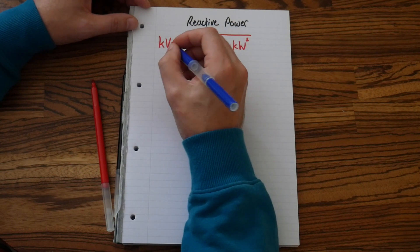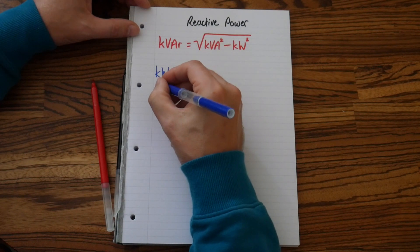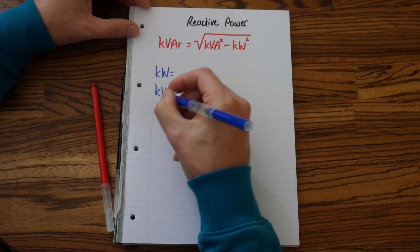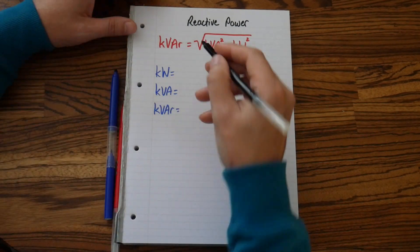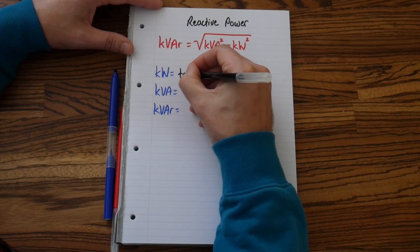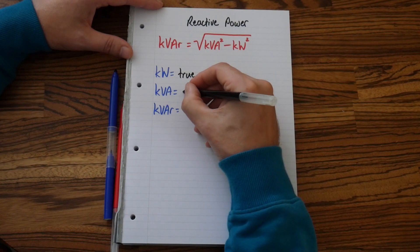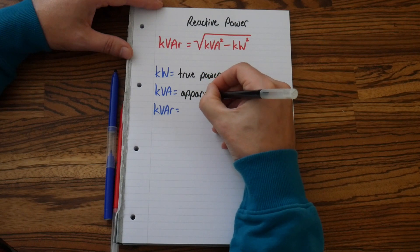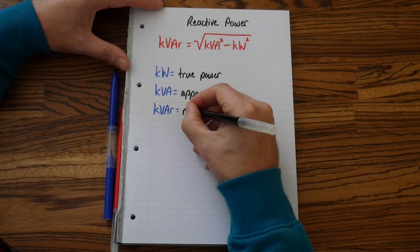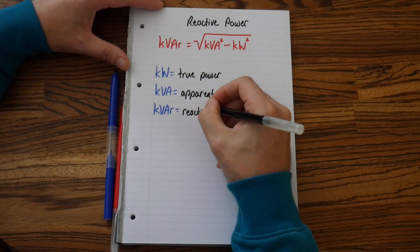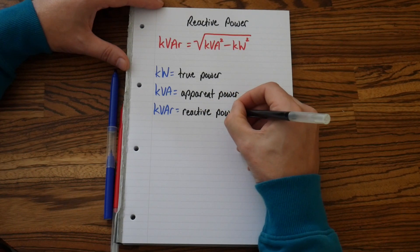Let's write down what our symbols mean. We have kilowatts, kVA, and kVAR. kW is true power, kVA is apparent power, and kVAR is reactive power.